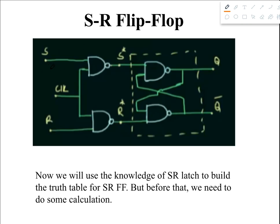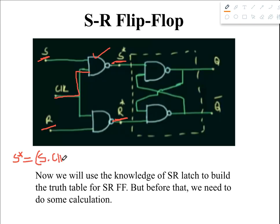The main inputs are S and R for the flip-flop, and S and R were also the main inputs for the latch. Since both almost have the same name, we can distinguish them by putting a star as superscript — so S* and R* for the latch inputs, and S and R for the flip-flop inputs. Now from this diagram we can write the equation for S*. S* is the output from this NAND gate, which has two inputs: S and the clock pulse.